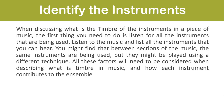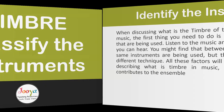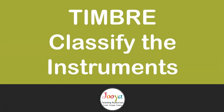When identifying the instruments in a piece of music, the first thing you need to do is listen for all the instruments being used. Listen to the music and list all the instruments that you can hear. You might find that between sections of the music the same instruments are being used but they might be played using a different technique. All these factors will need to be considered when describing timbre and how each instrument contributes to the overall ensemble.